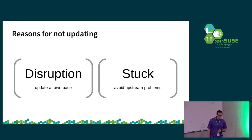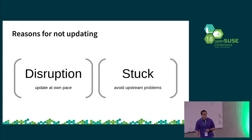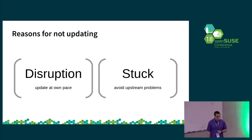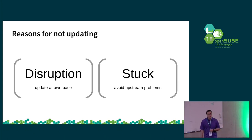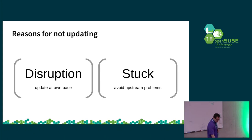In situations where you've already updated, encountered those problems and rolled back, or have read the mailing list and are aware of them, you may not want to update — but this leaves you in kind of a precarious situation, as we'll look at in the next slide.